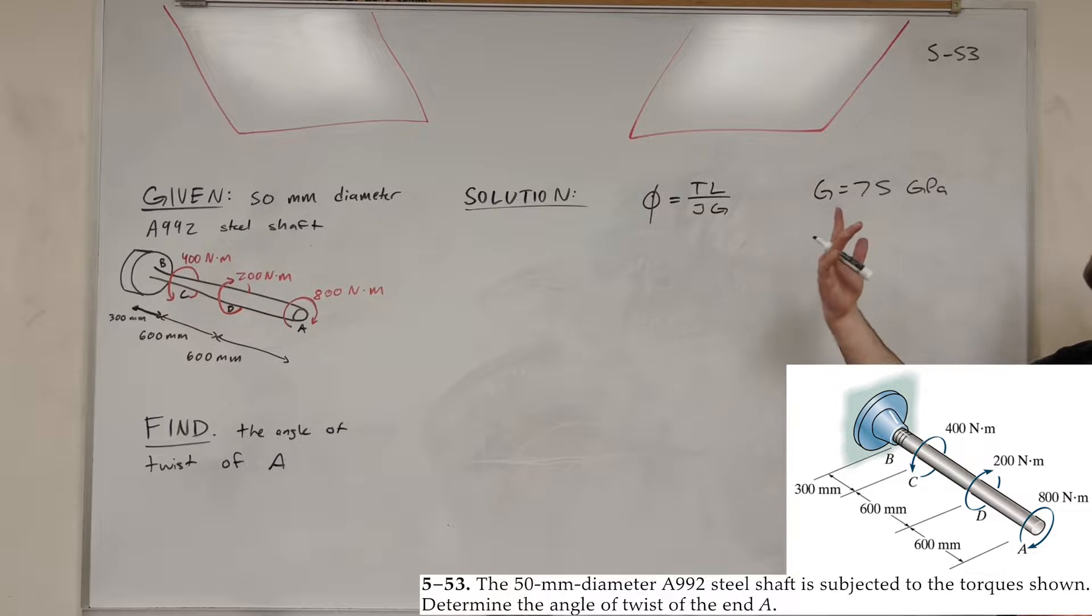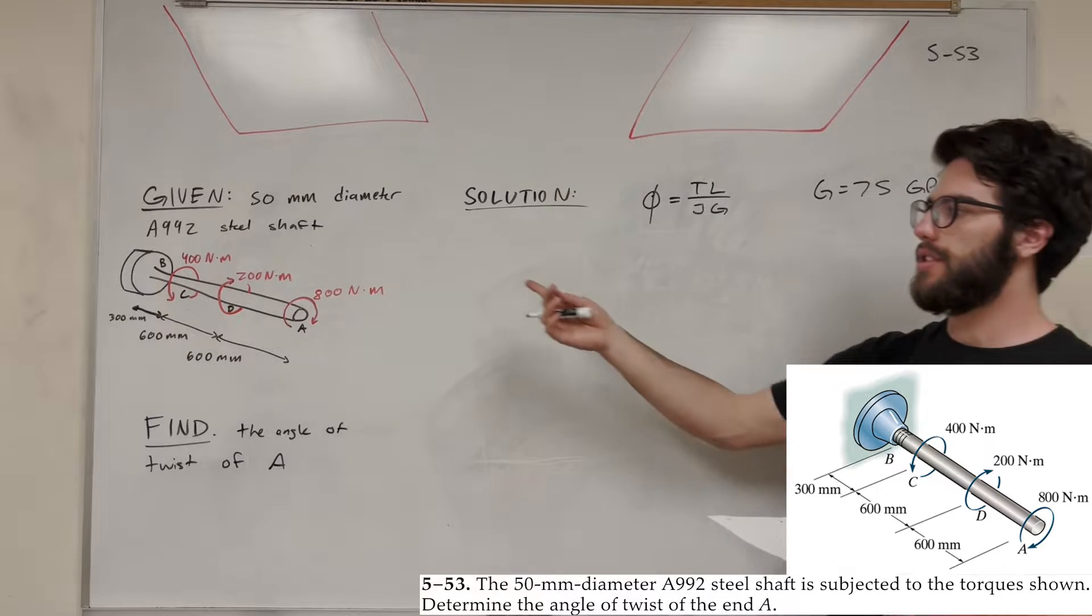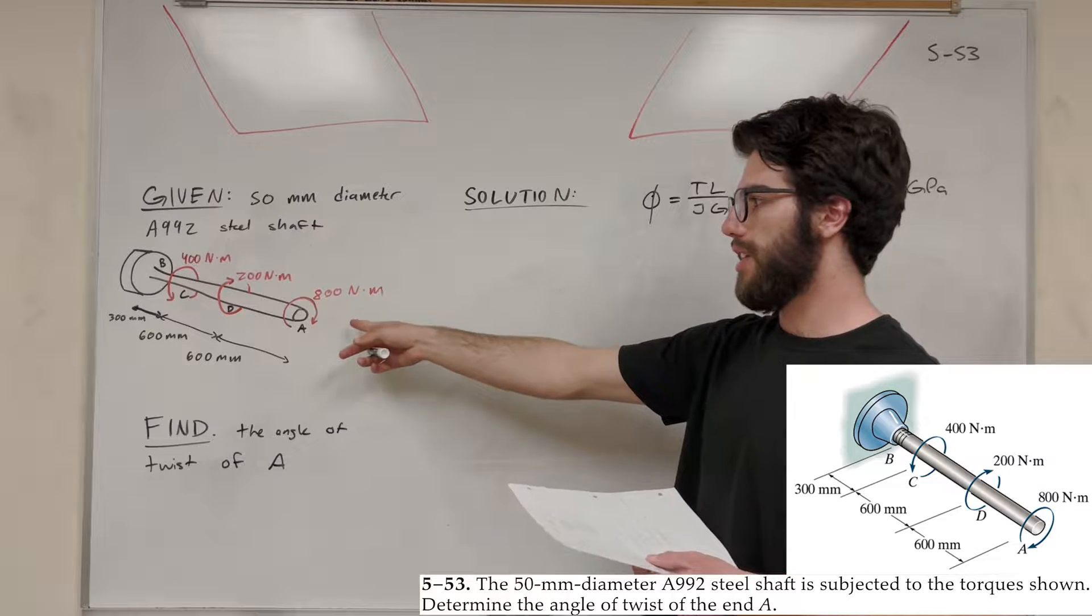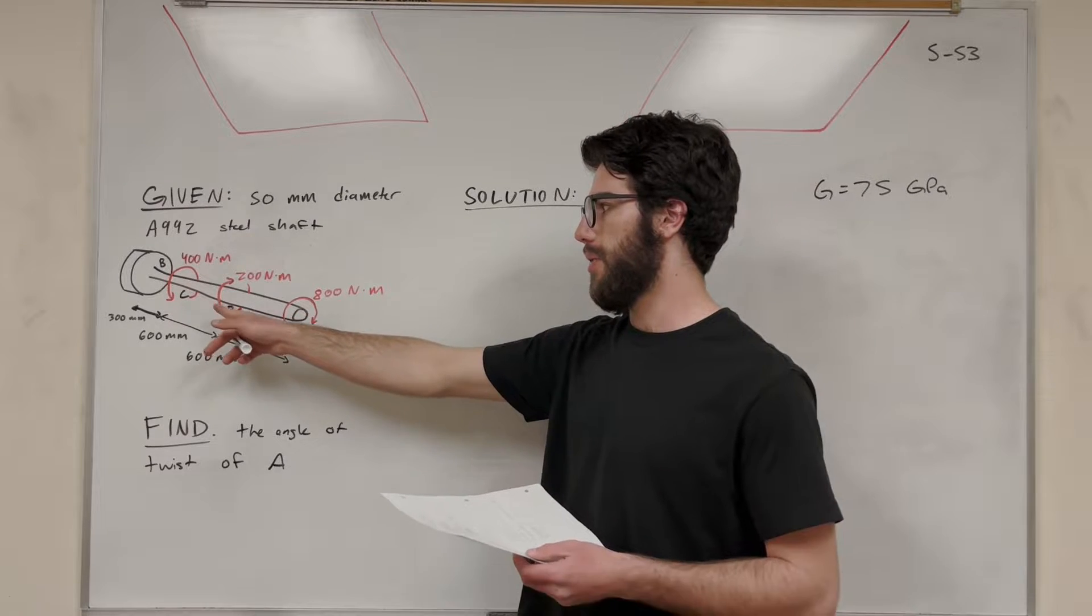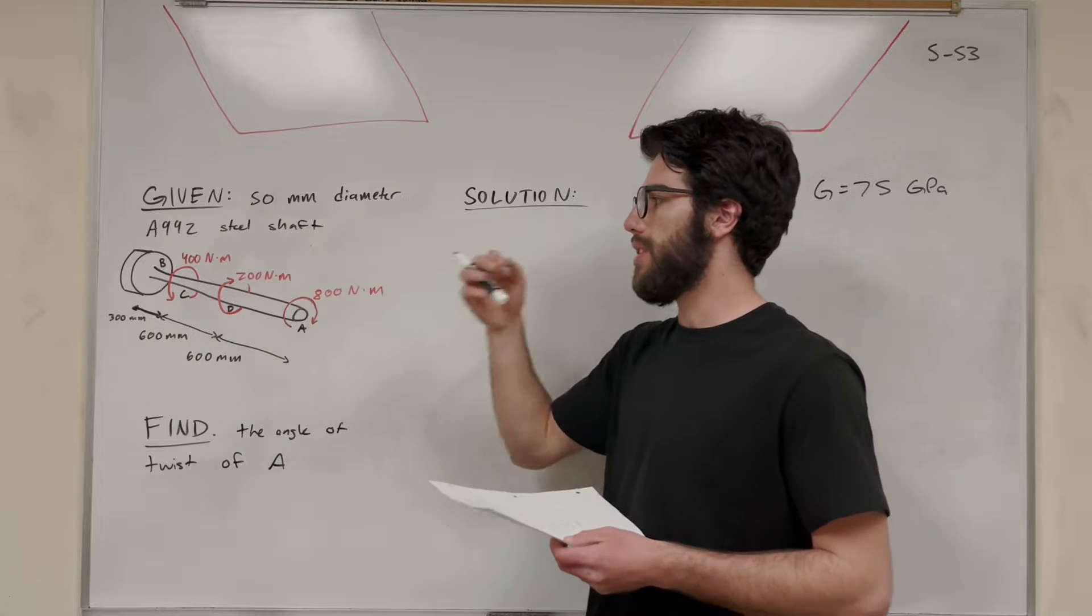We're trying to find the angle of twist. We're in Chapter 5. So we're given this 50mm diameter steel shaft with these three torque loadings on it. There's one at A, one at D, and one at C. We're given some distances and some loadings.